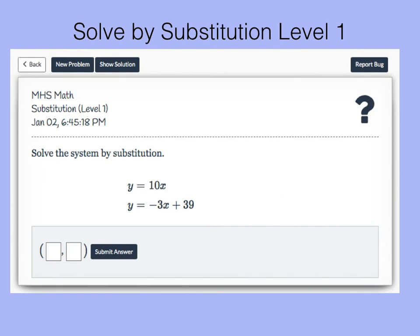In this problem we're given a system of equations, two linear functions: y equals 10x and y equals negative 3x plus 39.